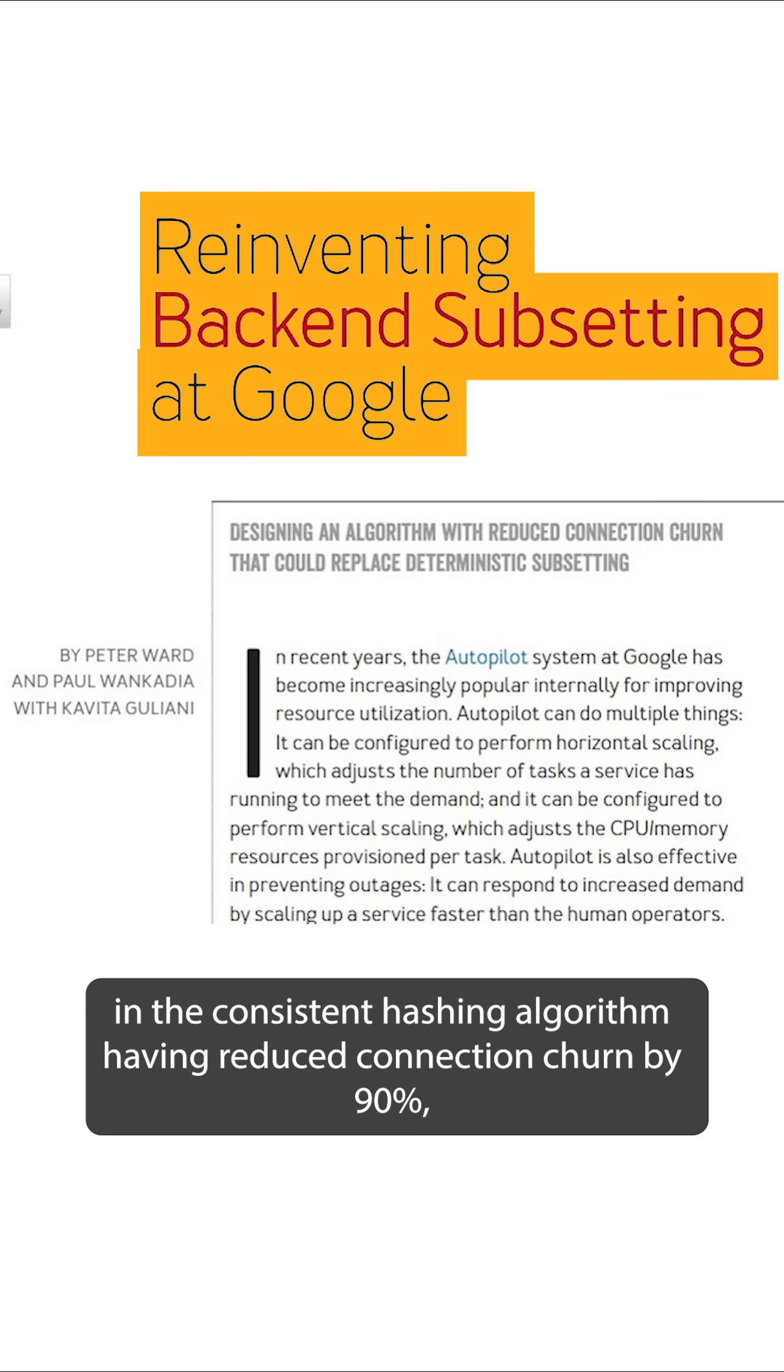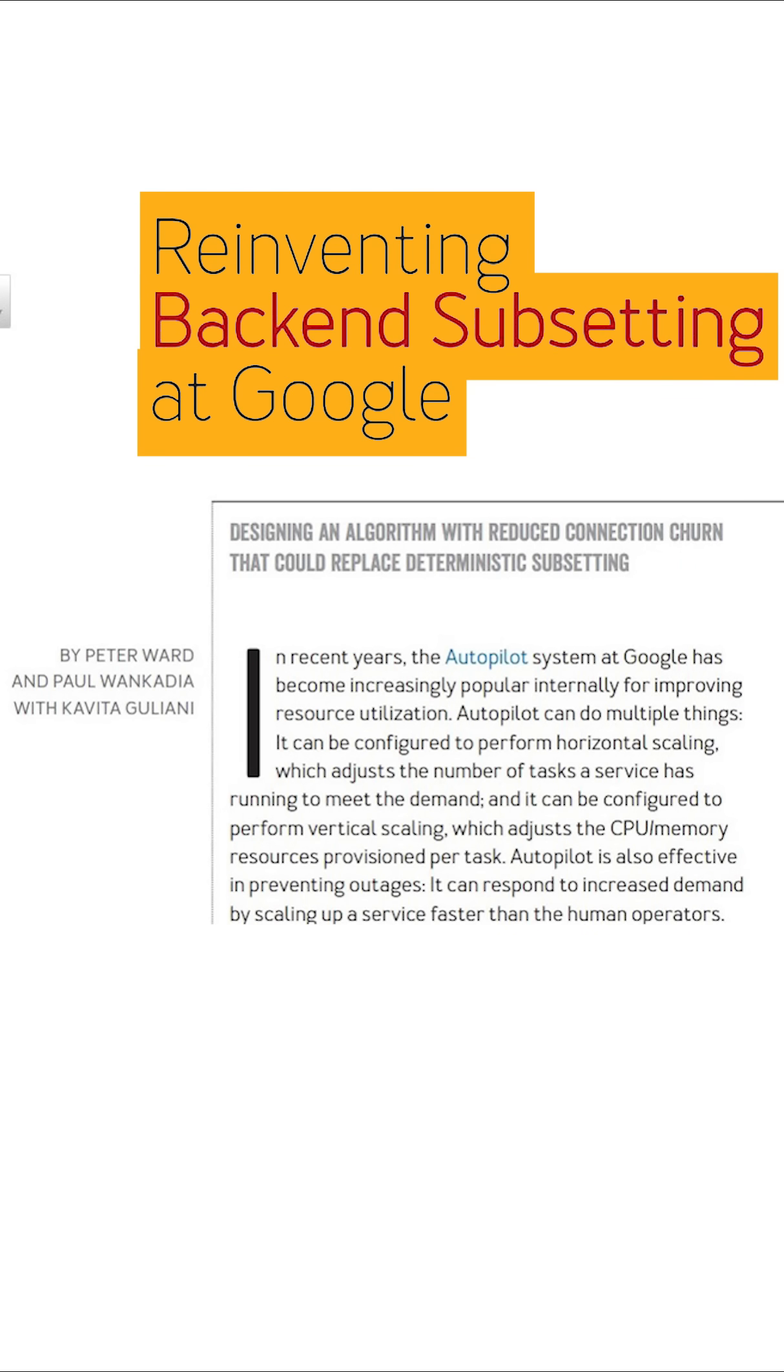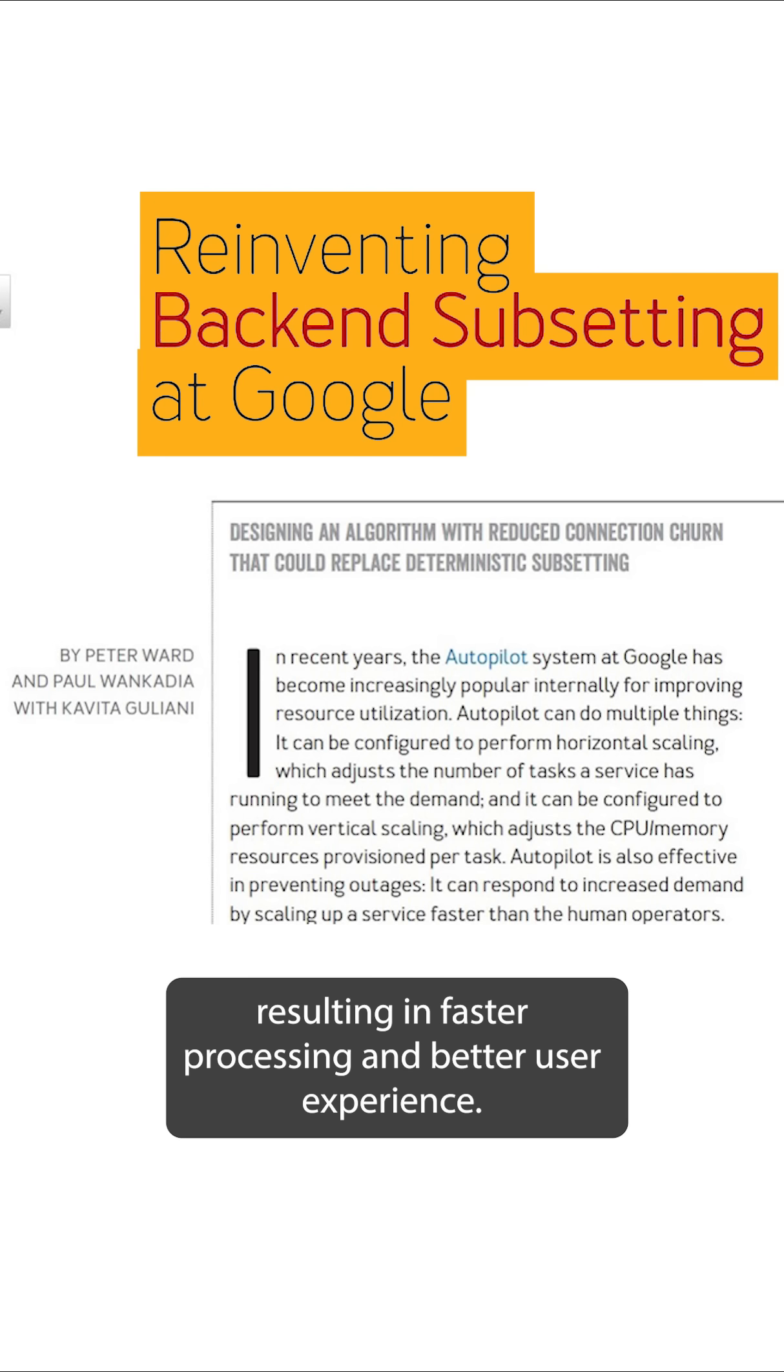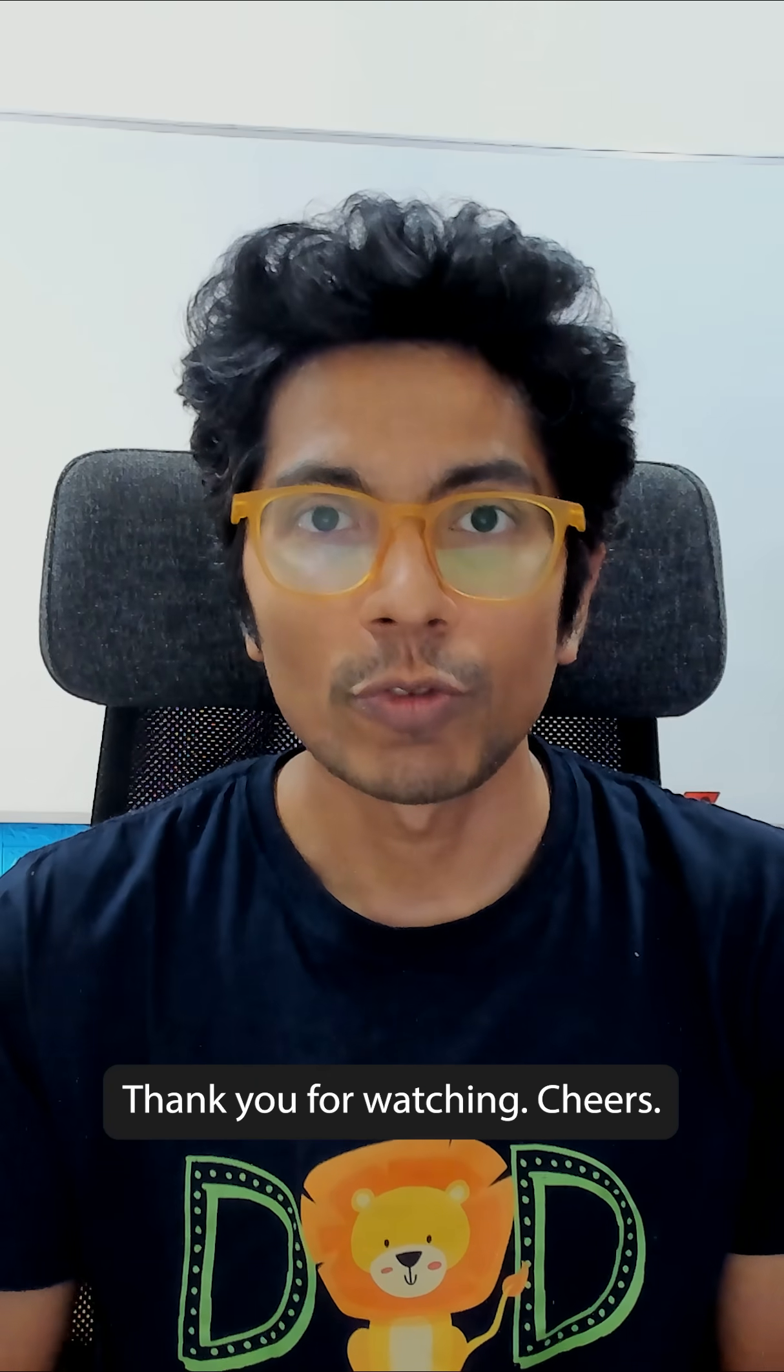These improvements have resulted in the consistent hashing algorithm having reduced connection churn by 90%, resulting in faster processing and better user experience. Thank you for watching, cheers!